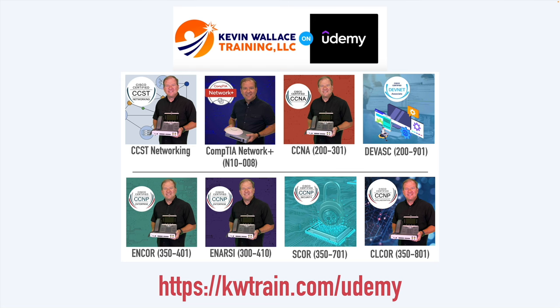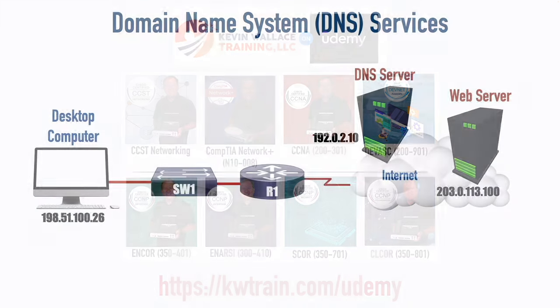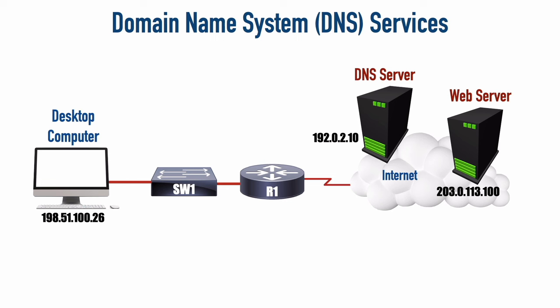Now let's take a look at DNS and see how it works. For me, it's a lot easier to remember the name of a destination on the internet as opposed to the IP address of a destination on the internet. For example, if I want to go to my website at kwtrain.com, I don't know what the IP address is, but routers need to know that. They route based on IP address information, not based on names.